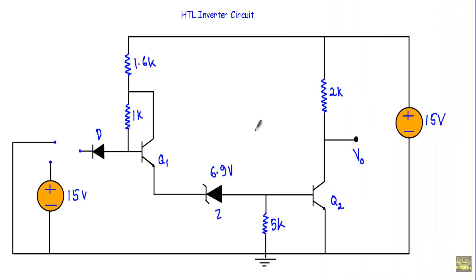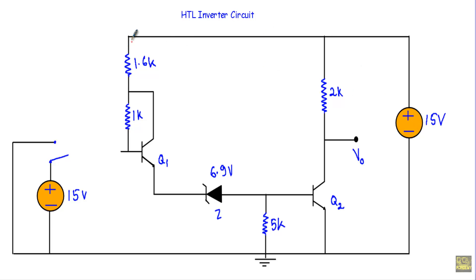Now let me talk about the last case of the inverter circuit: input at logic 1. This terminal will be connected with the 15 volt source. The positive terminal connects to the N side of the diode and the negative terminal to the P side, so this diode will be in reverse bias. With no current through this path, I replace the diode with an open circuit. The full 15 volt is applied between this terminal and ground. To turn on transistor Q1, the Zener diode, and Q2 together, I need a voltage Vx approximately equal to 8.5 volt.